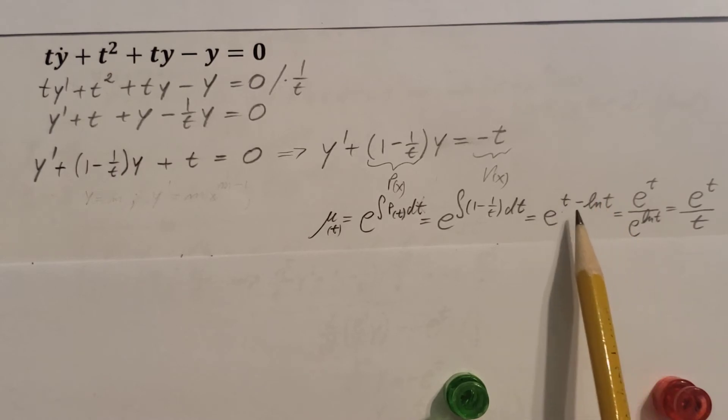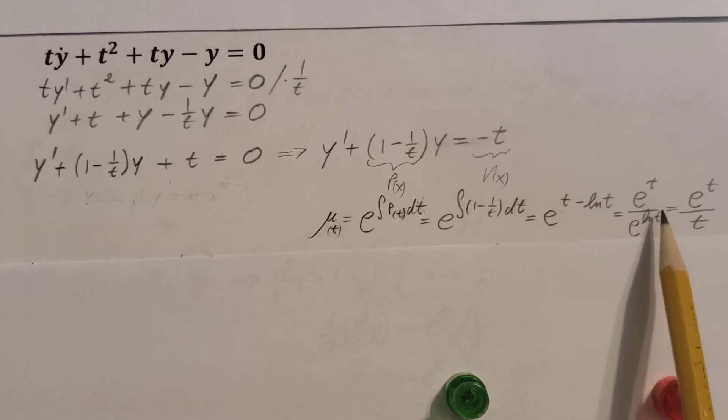Now we're going to proceed to break this up. E to the t divided by the negative shows that we have a division, so that goes in the bottom. And e to the ln t, the e and the ln cancel each other out, so all we have is a t. So e to the t divided by t.